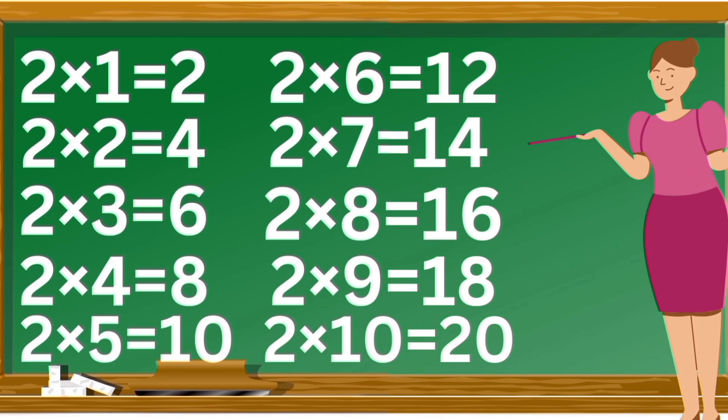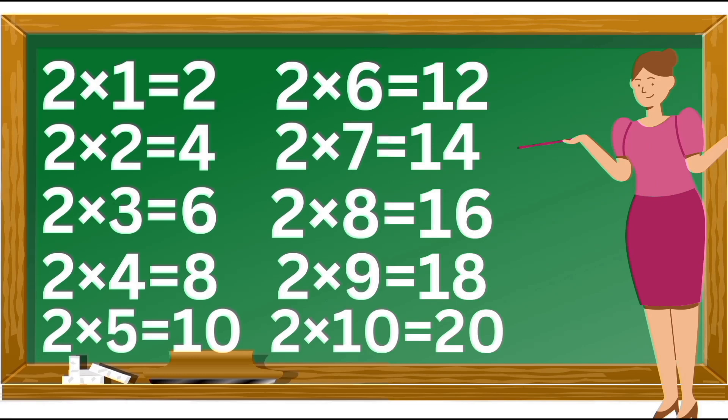Two ones are two. Two twos are four. Two threes are six. Two fours are eight. Two fives are ten. Two sixes are twelve. Two sevens are fourteen. Two eights are sixteen. Two nines are eighteen. Two tens are twenty.